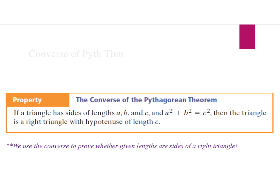The nice thing with the Pythagorean Theorem is that its converse is always true. The converse says: if a triangle has sides A, B, and C, and A squared plus B squared equals C squared, then we know we have a right triangle. I'll show you what the original Pythagorean Theorem said on the next slide so you can see the difference.